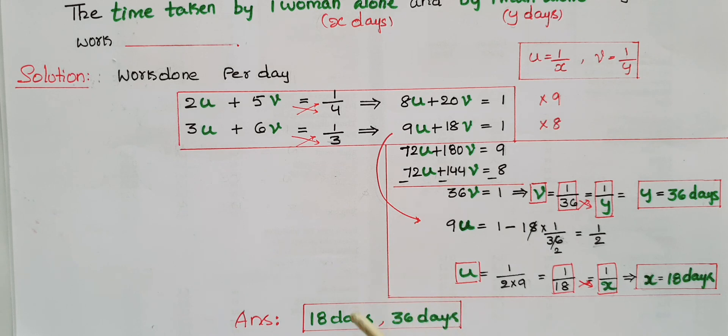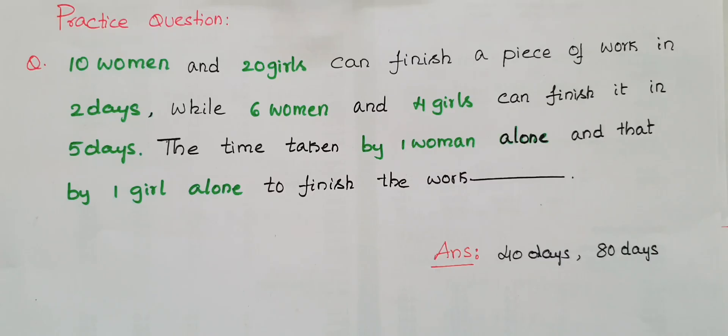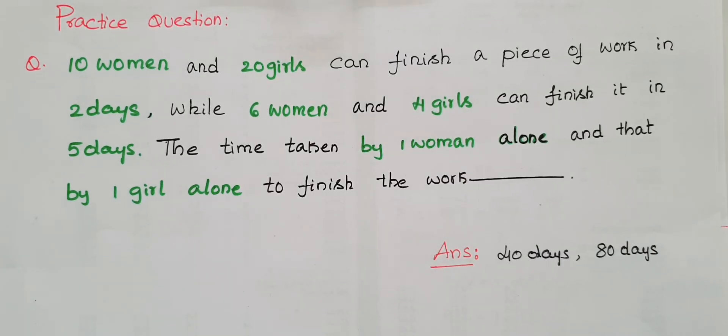So the time taken by one woman alone is 18 days and by one man alone is 36 days. Now please do this practice question.